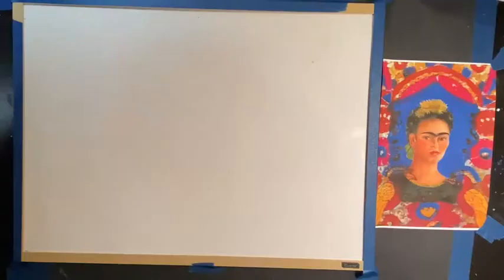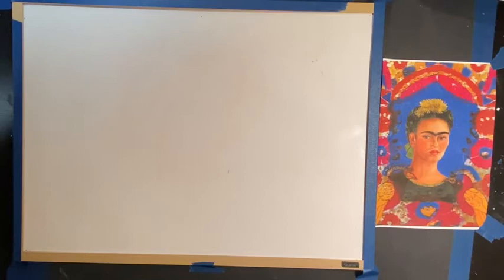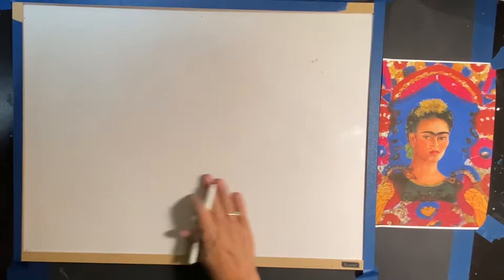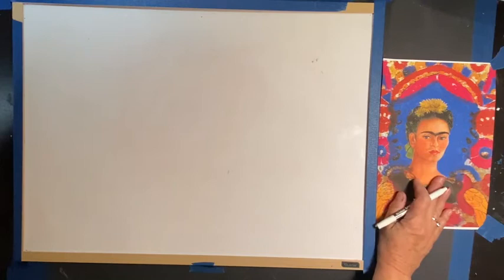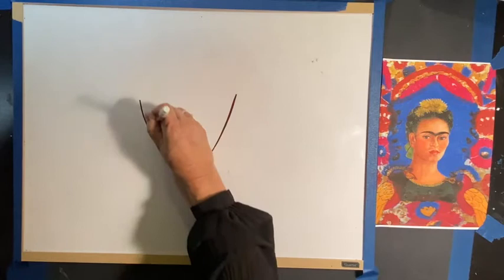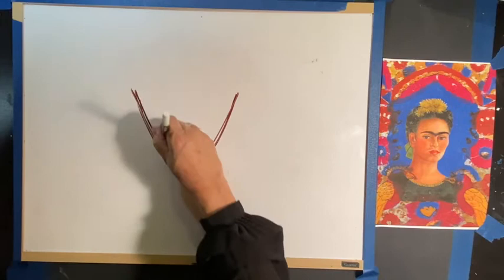All right students, thank you for waiting. I set up the studio so we can see each other from above. I'm going to use a dry erase board — it's a lot easier for me to show you. I've got Frida Kahlo here and I'm going to do a portrait of her. I'll show you, then you can pause and do it yourself. We're going to slow it down so don't worry about rushing.